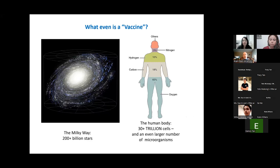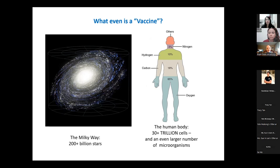So what even is a vaccine? I know that as pharmacy students you have a lot of chemistry and biology, but I always like to use this illustration. Here's the Milky Way — it has over 200 billion stars. But the human body has over 30 trillion cells, meaning every single one of us has something like 1,500 times as many cells in our body as there are stars in our entire galaxy. That's a phenomenal number of things going on in the body.